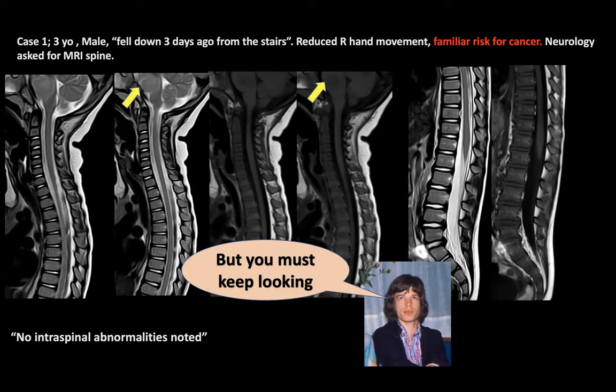If you have listened to the posterior fossa tumor lectures in my channel, you will know that whilst the posterior part of the brainstem is associated with benign tumors — benign astrocytomas or glioneuronal tumors, often exophytic — when the anterior part of the pons is involved, the most likely diagnosis is a DIPG, or rather a pontine diffuse midline glioma. However, we know that these diffuse midline gliomas are characterized by a specific histone mutation.